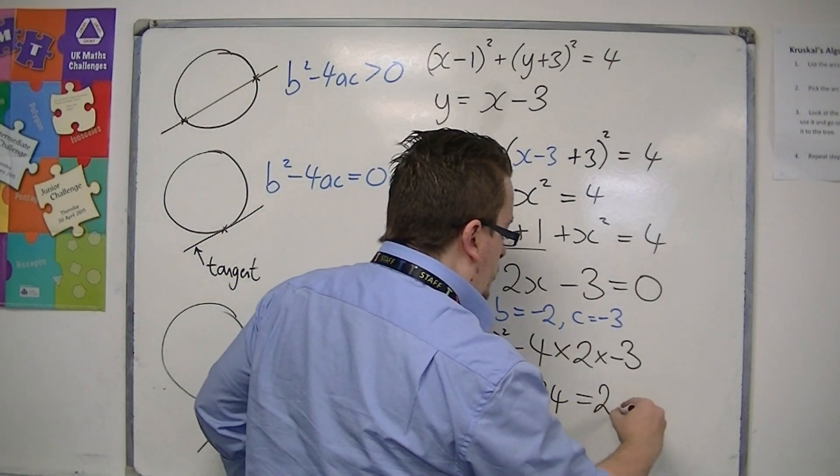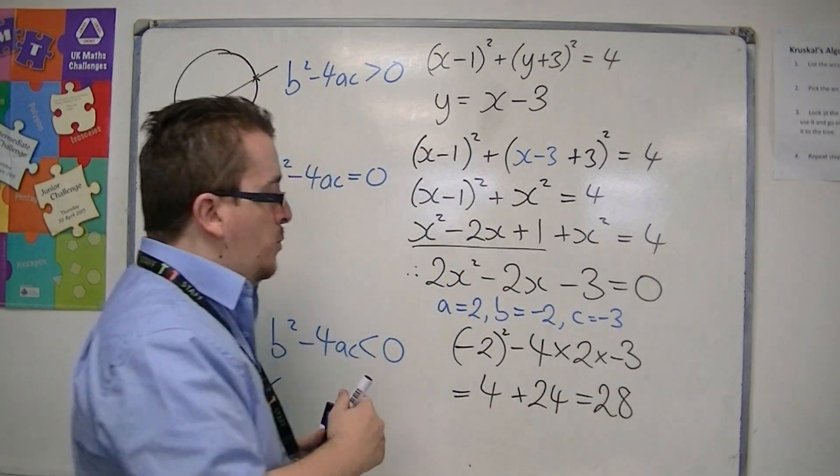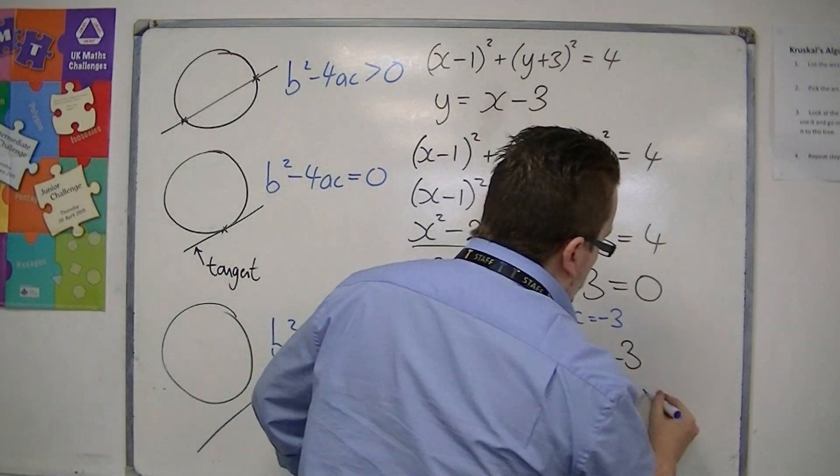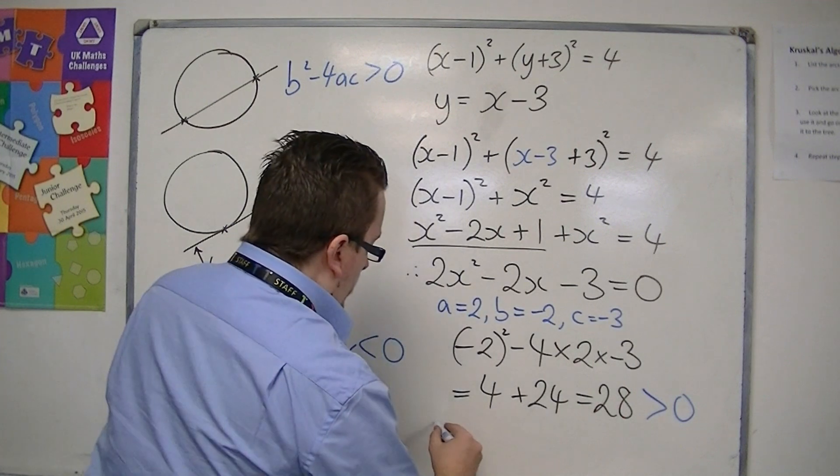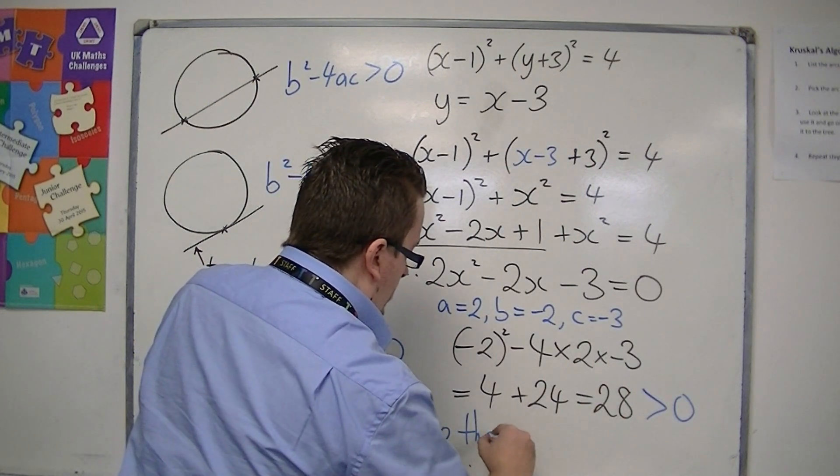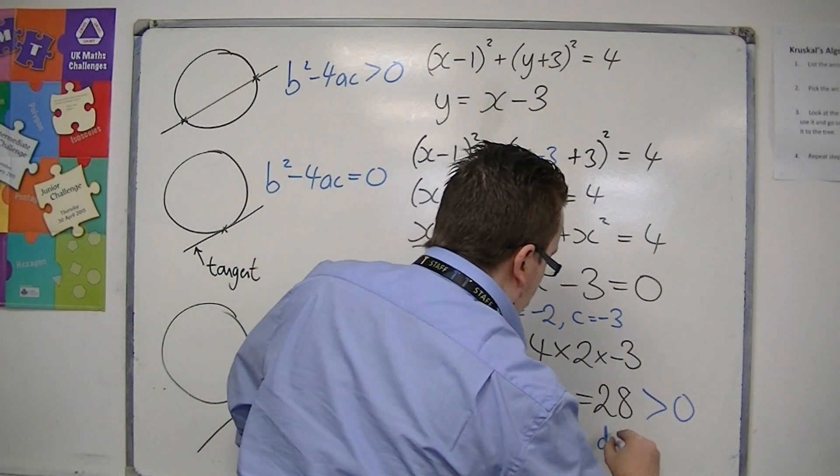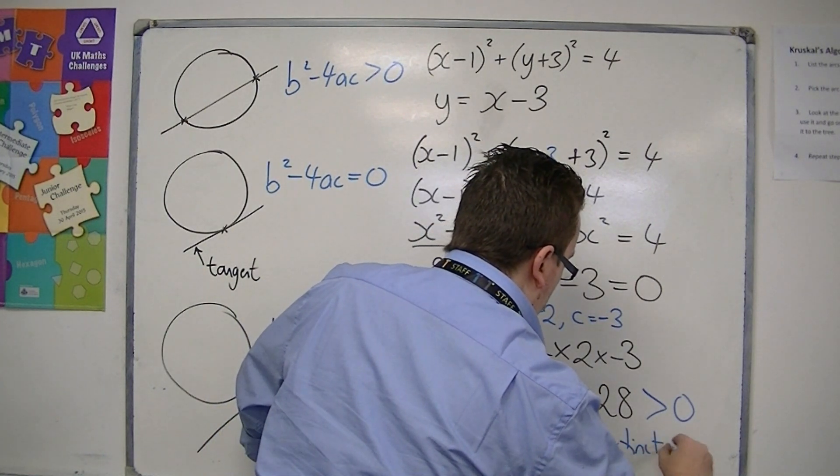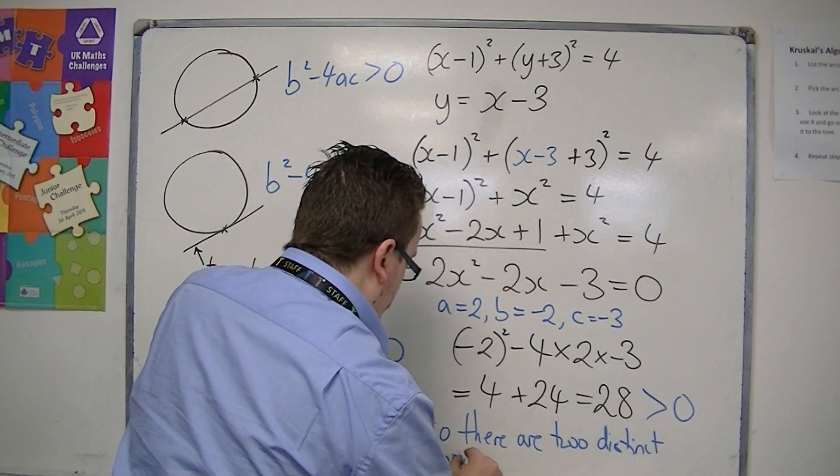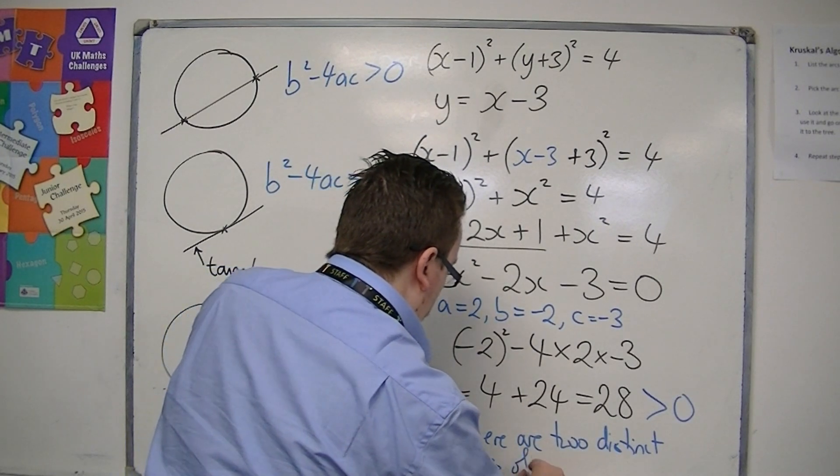So we get twenty-eight. Now twenty-eight is larger than zero, so there are two distinct points of intersection.